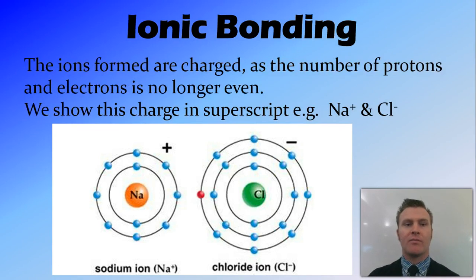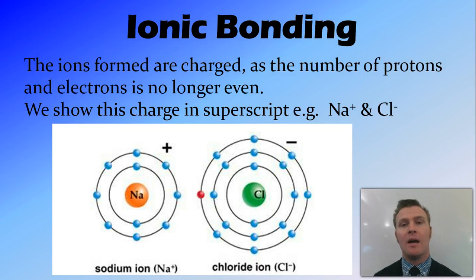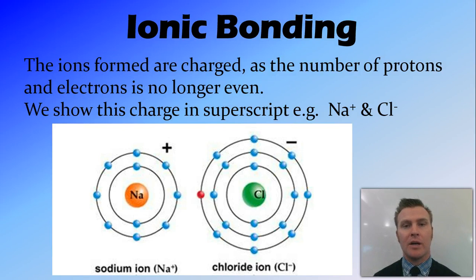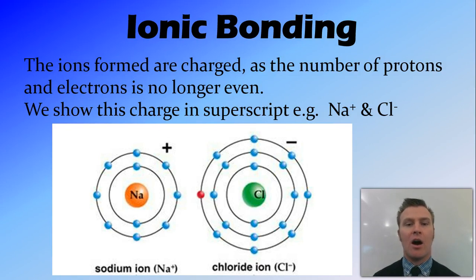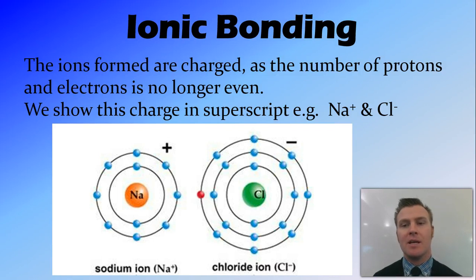When they've bonded, we say they've formed ions, and the ions they've formed are charged. The reason they're charged is that the number of protons and electrons is no longer equal. Sodium starts off with equal protons and electrons, but when it gives away an electron, it now has one extra proton, giving it a positive charge. Conversely, chlorine gained an electron and now has a negative charge. To show this charge, we write in superscript: sodium is Na+ and chlorine is Cl−.